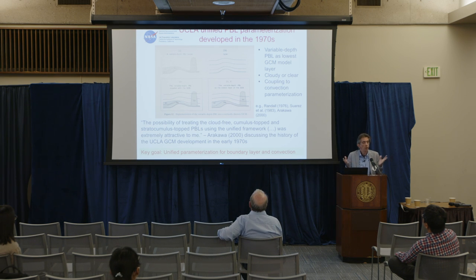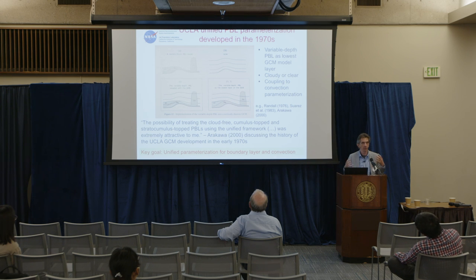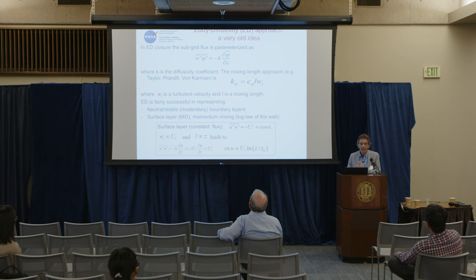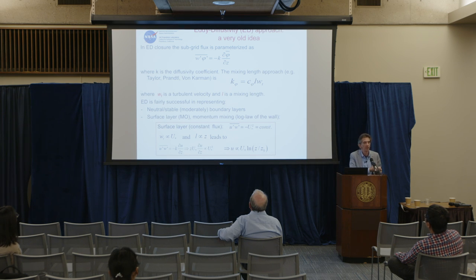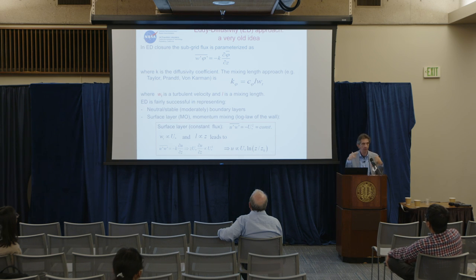The key goal for a lot of us has been to come up with unified approaches for representing both the boundary layer and convection. A major problem is the fact that you have different communities that have historically grown somewhat separately — you have the boundary layer community, the turbulence community, and the convection community — and they have not always used even the same ways of thinking.